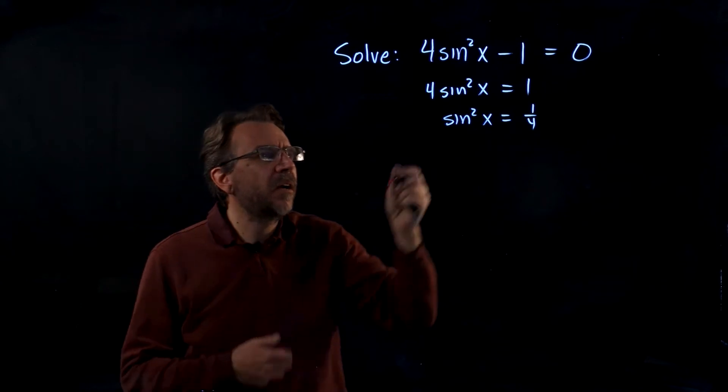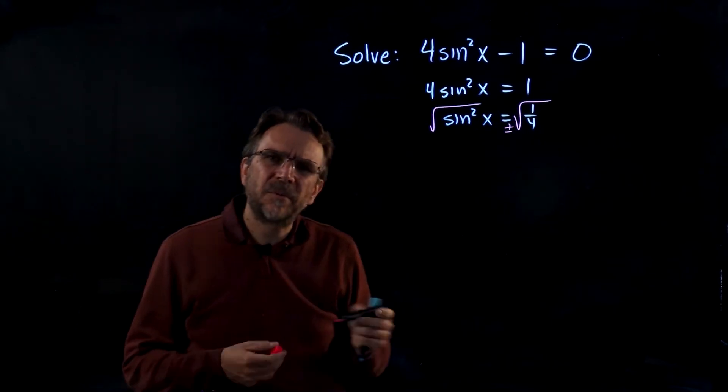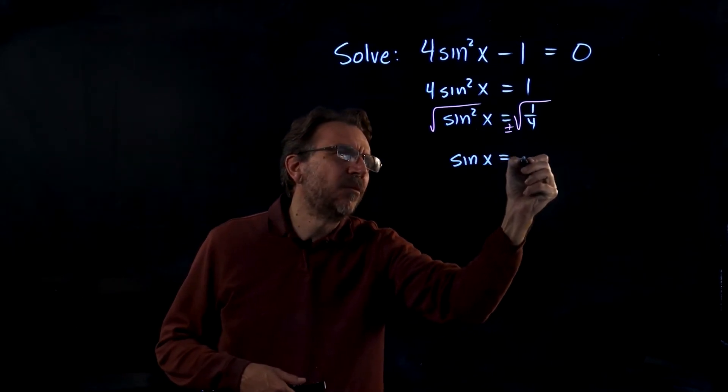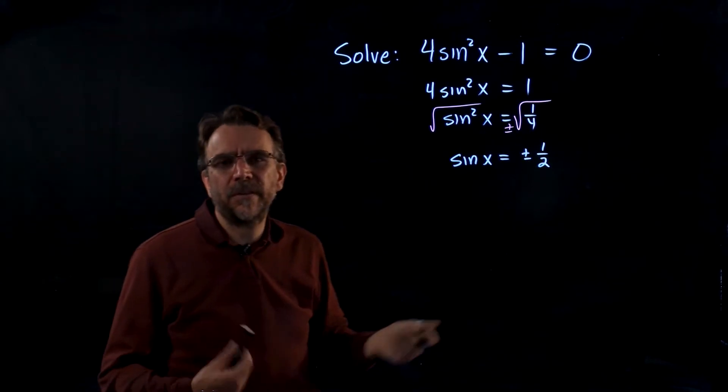Now to get rid of the square, I'll go ahead and take the square root, extracting square roots. Don't forget to put the plus or minus when you do that. That leaves me with sine x equals plus or minus 1 half. The square root of 1 fourth is 1 half.